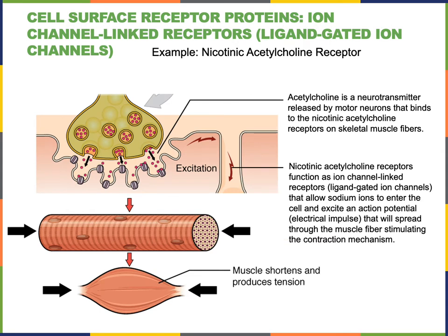The nicotinic acetylcholine receptor is an example of an ion channel-linked receptor, or ligand-gated ion channel. Acetylcholine is a neurotransmitter released by motor neurons. It is water-soluble and will bind to a cell surface receptor. The nicotinic acetylcholine receptor functions as an ion channel-linked receptor. When acetylcholine binds to the nicotinic acetylcholine receptor, the receptor will open an ion channel that allows sodium ions to enter the cell.